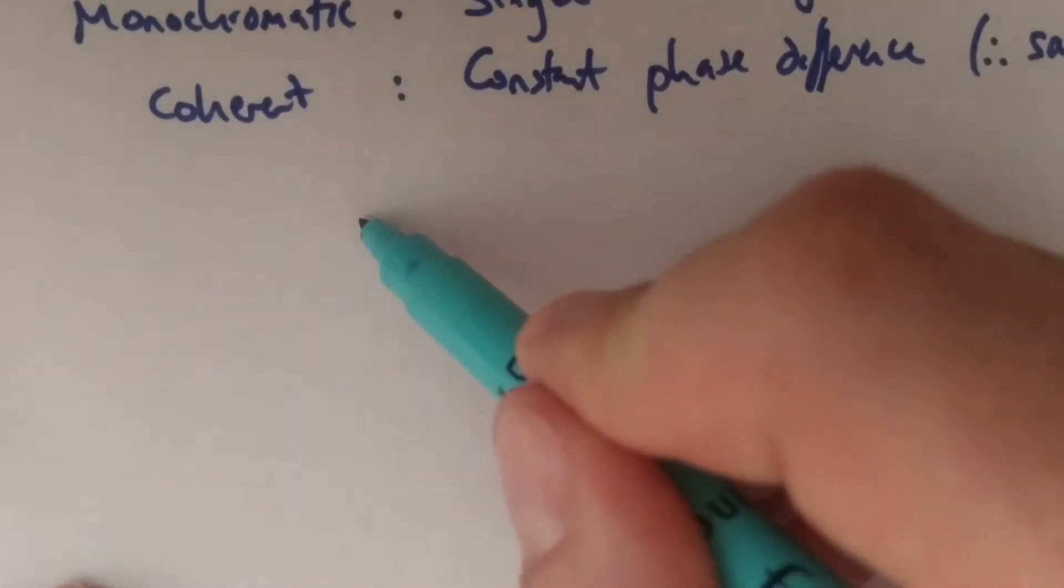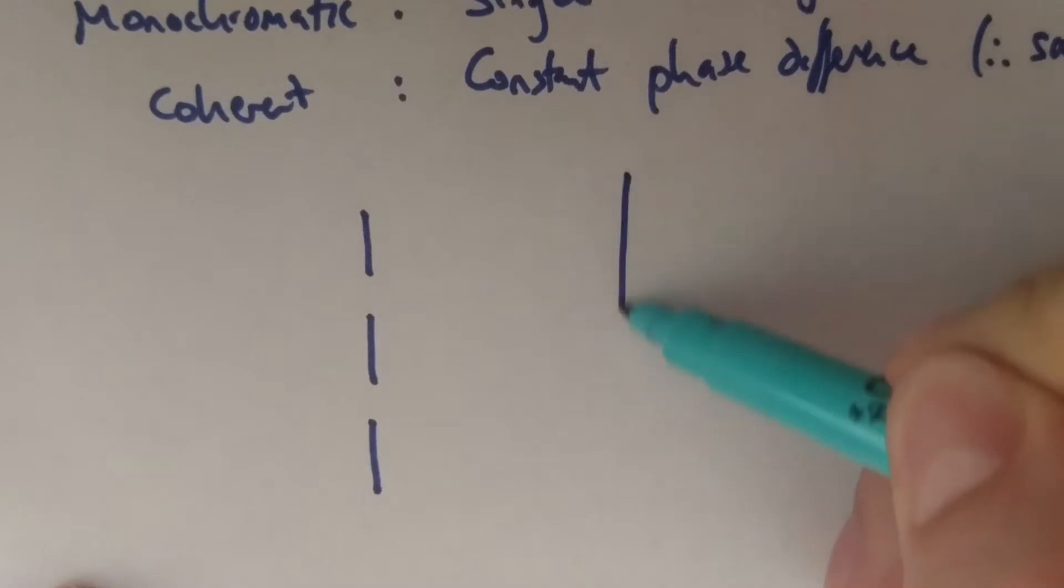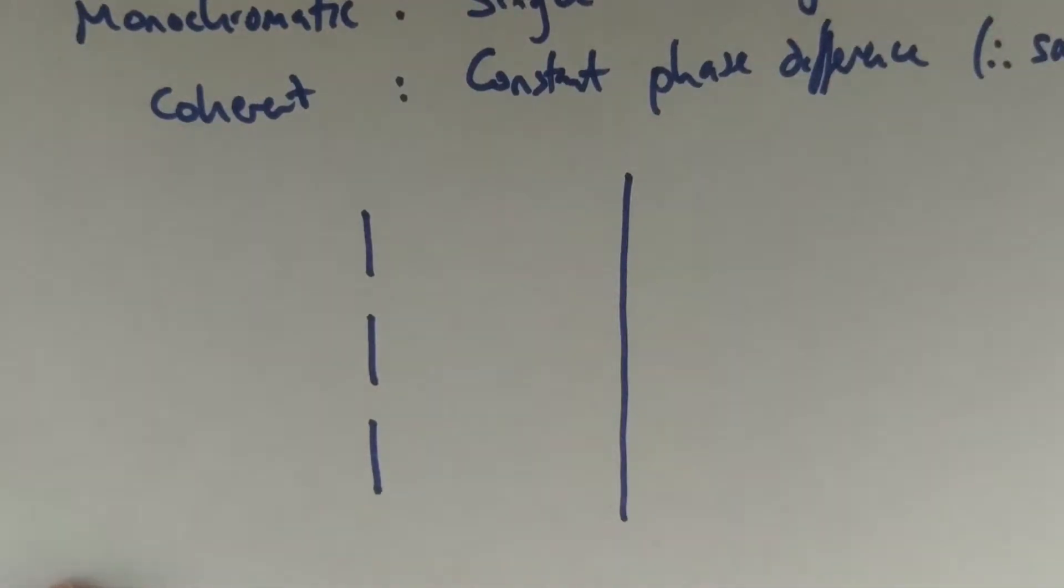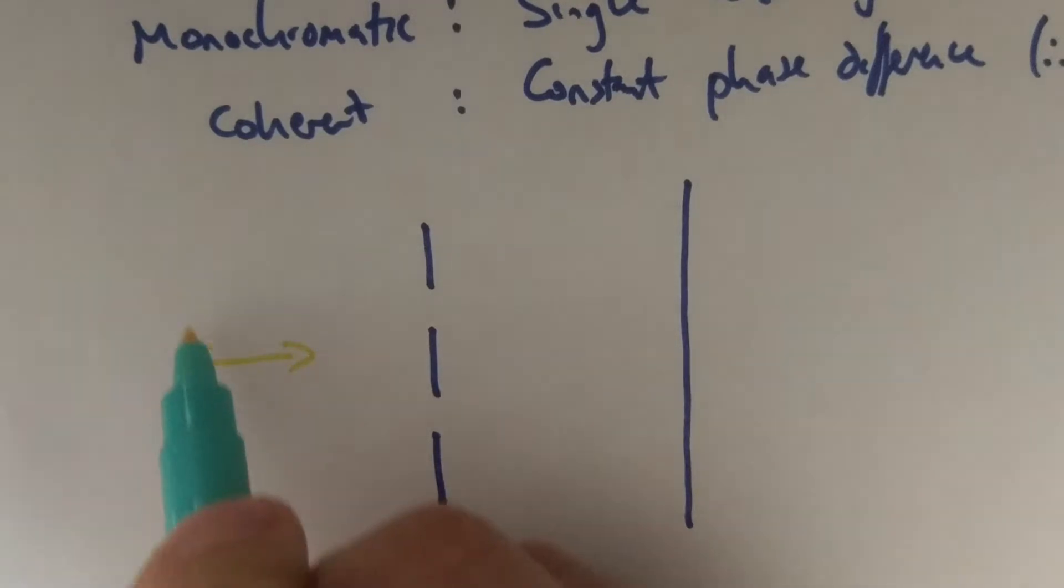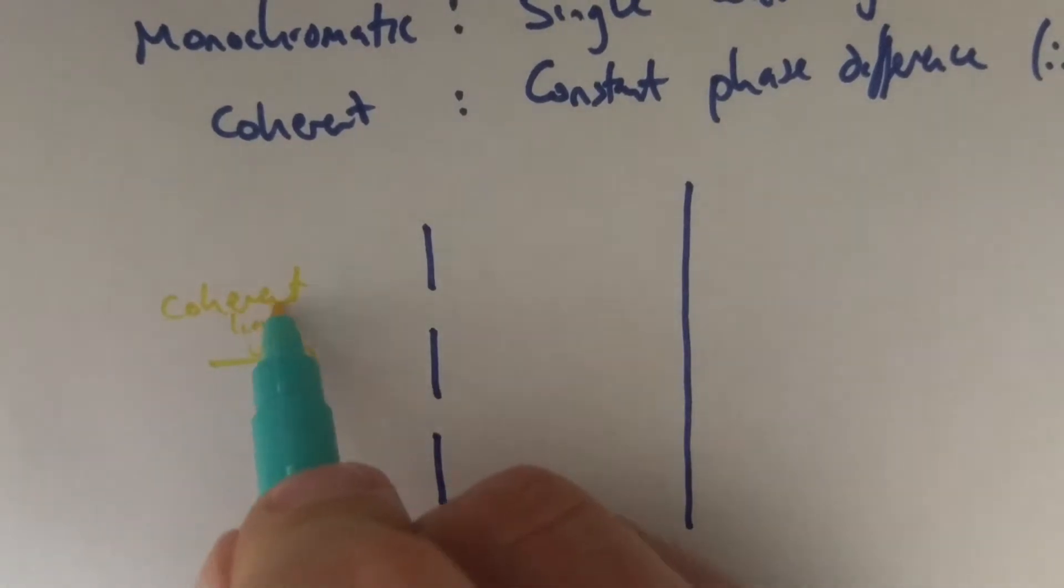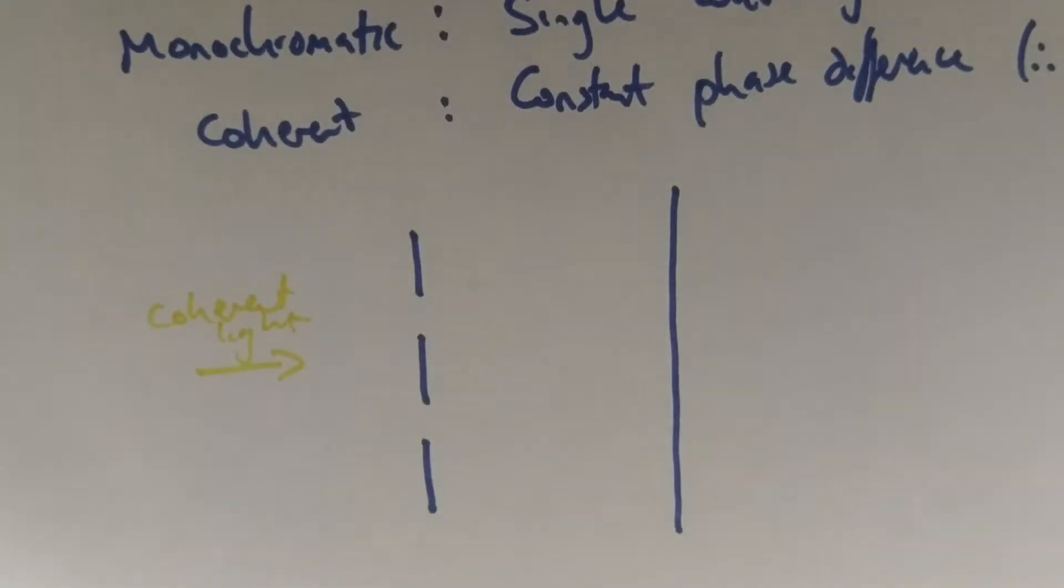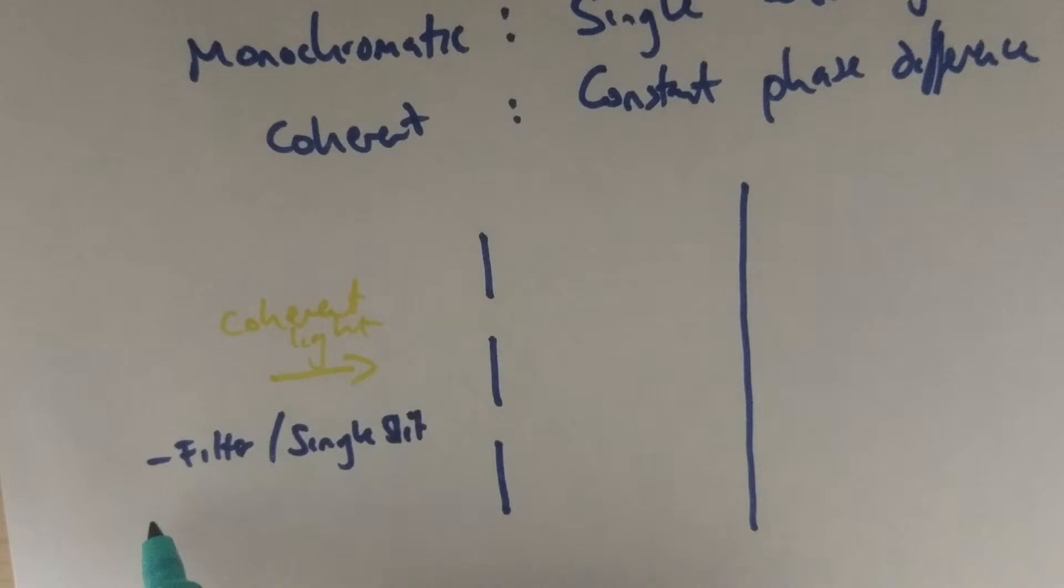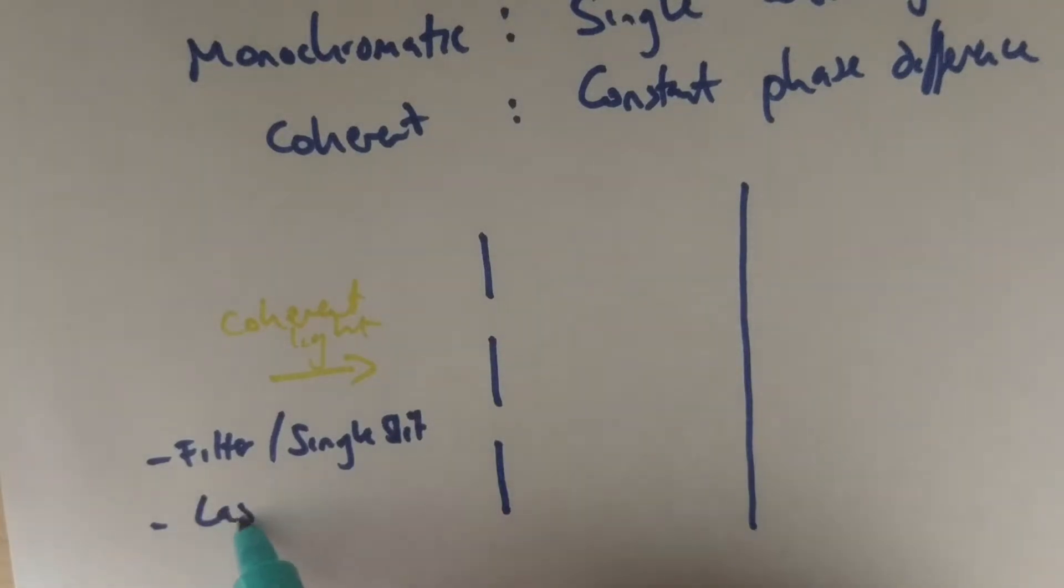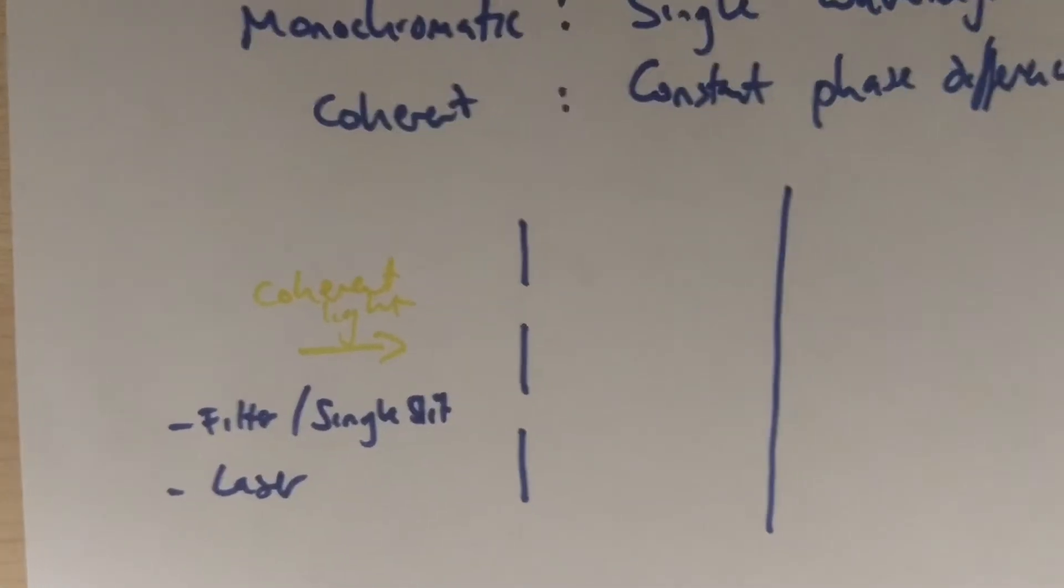When we're looking at Young's double slit, we've got our double slit setup, we've got our screen. The key thing for this to work is you must have coherent light. In the past, when Young was doing this experiment, he would have a color filter followed by a single slit to get that monochromatic coherent light. These days we will often just use a laser.